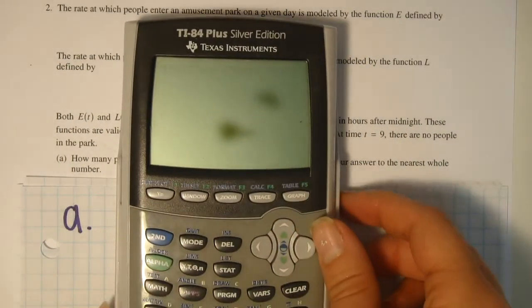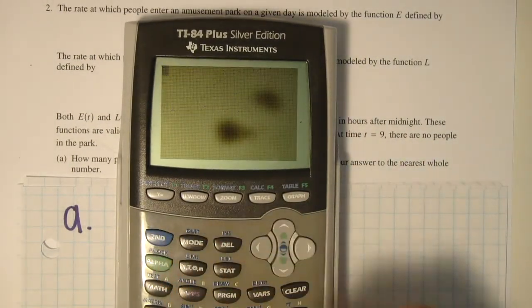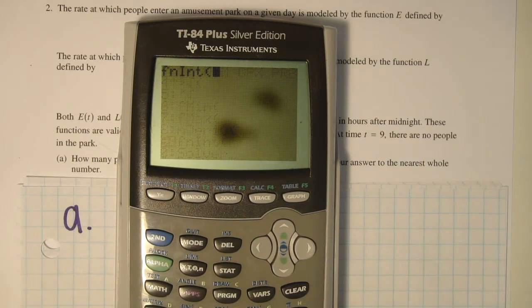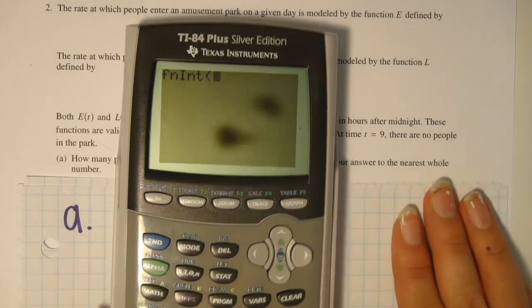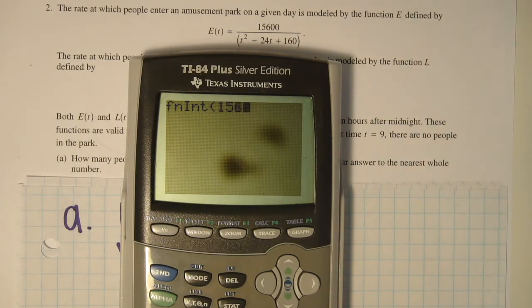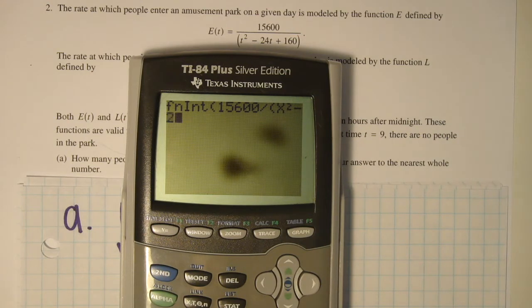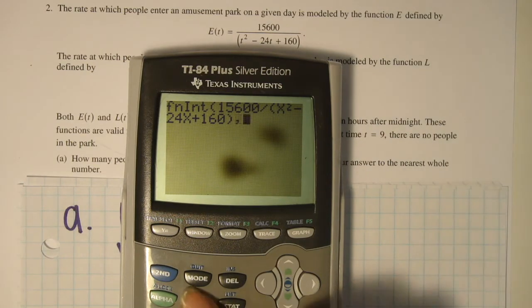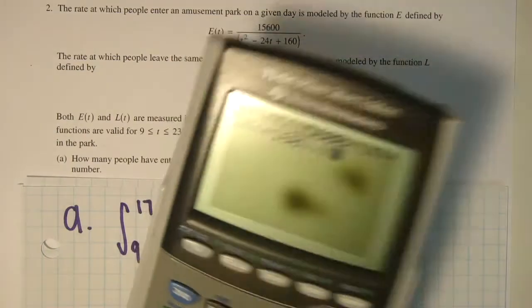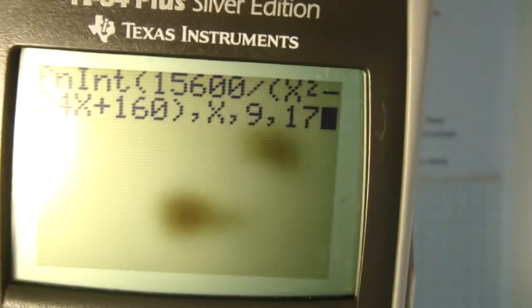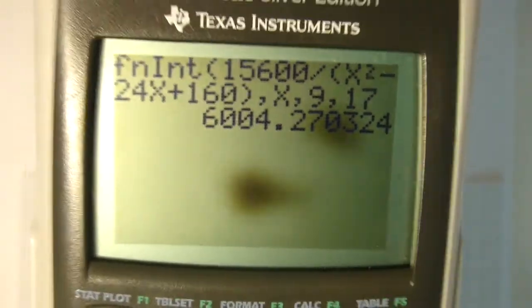Here I have my TI-89 and I will turn this on and I will go to math and we will go to integral which is number 9 and all we have to do is plug in our problem. So I will plug in E which is this and I am doing this in terms of x. Also make sure that you have the correct parenthesis or else it will tell you that you have an error so you will want to do that. Also since I am doing it in terms of x I will do comma which is found here, comma x, comma and then our limits which is 9 and 17, enter and you get 6,004.